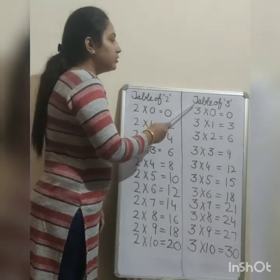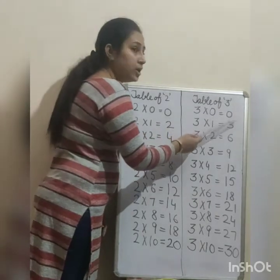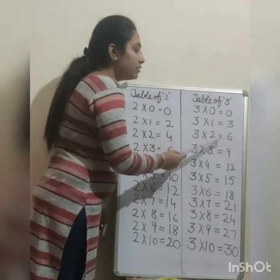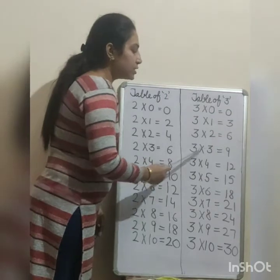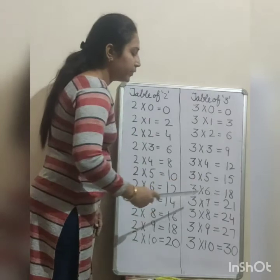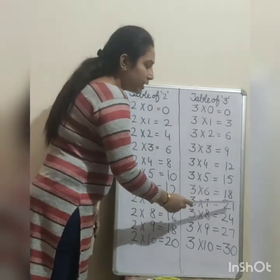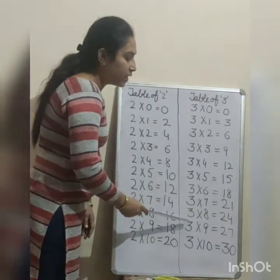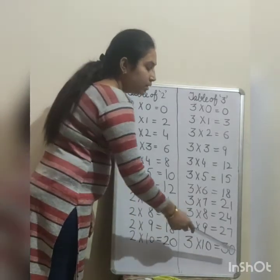Speak again. Table of 3. 3 zeros are 0, 3 ones are 3, 3 twos are 6, 3 threes are 9, 3 fours are 12, 3 fives are 15, 3 sixes are 18, 3 sevens are 21, 3 eights are 24, 3 nines are 27, 3 tens are 30.